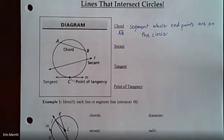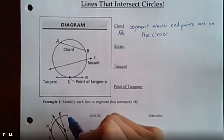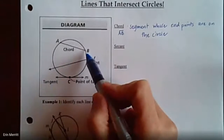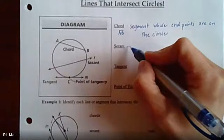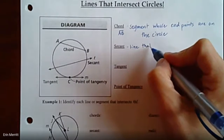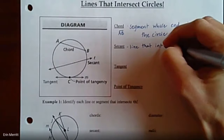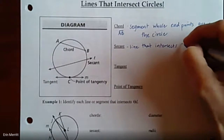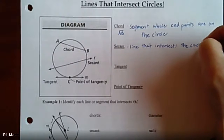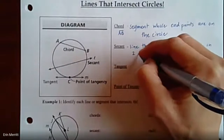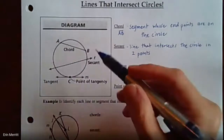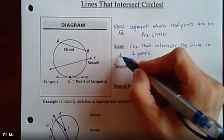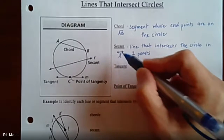A secant line is typically a line or ray that extends outside of the circle, but it's different from a chord because the chord ends on the circle while the secant extends beyond it. A secant is a line that intersects the circle in two places, or two points. The way it's labeled on the paper is line L — that would be your secant line in the picture.